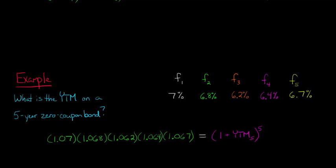But let me just calculate out. So this would be 1.378 equal to 1 plus the yield to maturity of year 5 to the fifth power.